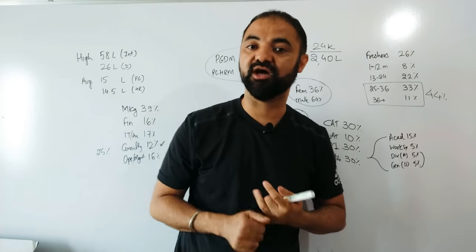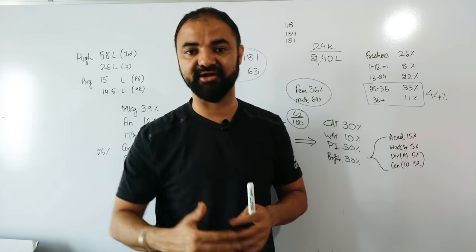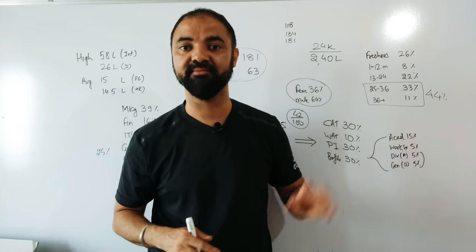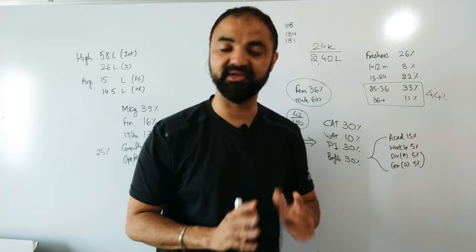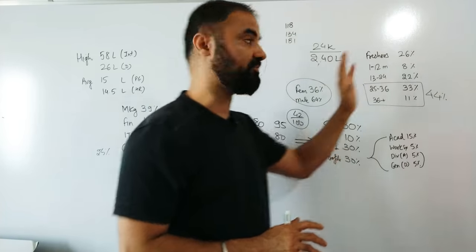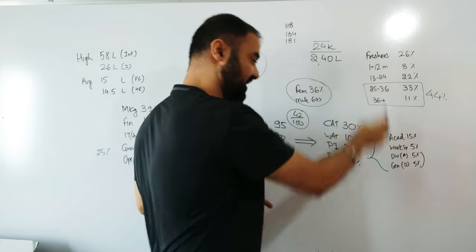24,000 people are getting IIMs, SPJIMR, FMS, IIT Bombay. If I combine all the calls together, 24,000. Your target is to be in the top 10%. Possible? Yes. Out of 24,000, after GD and PI, 6,000 are finally selected. Your target is to be in the top 24,000.